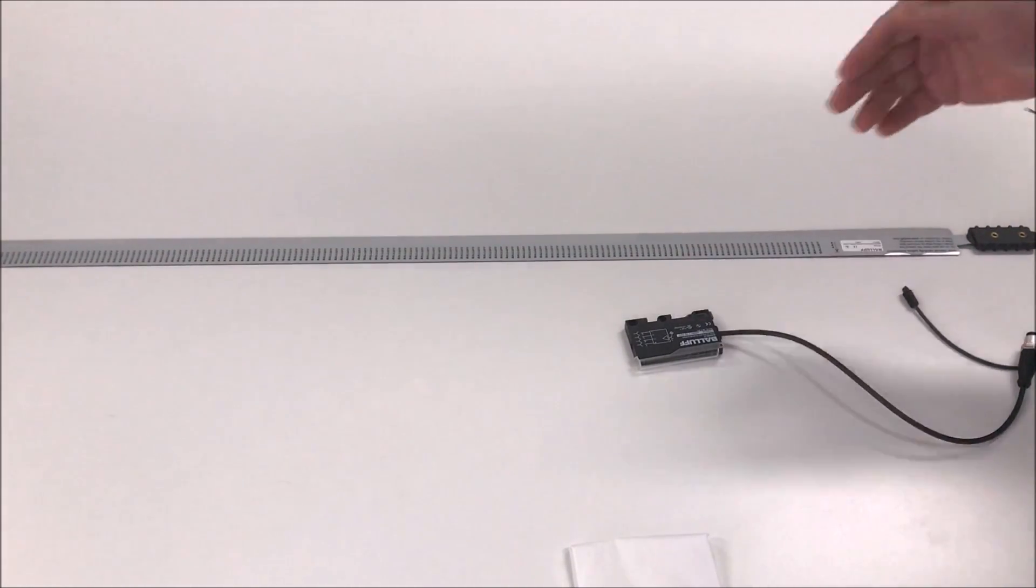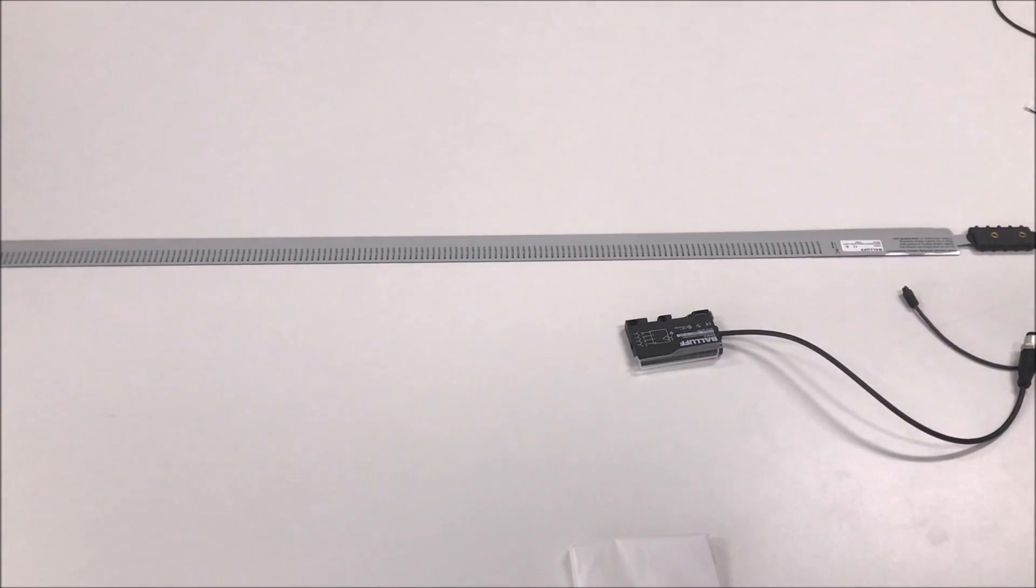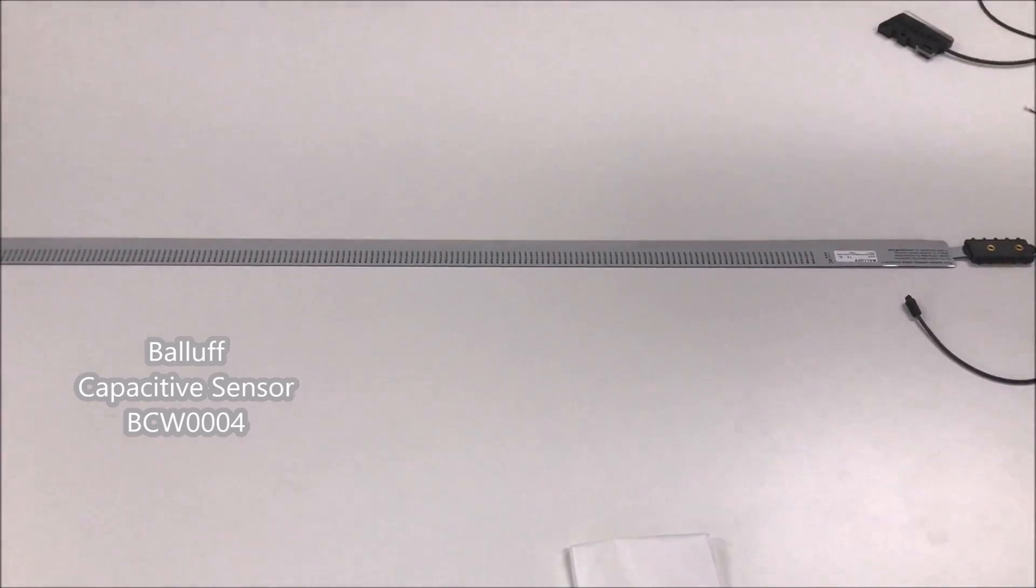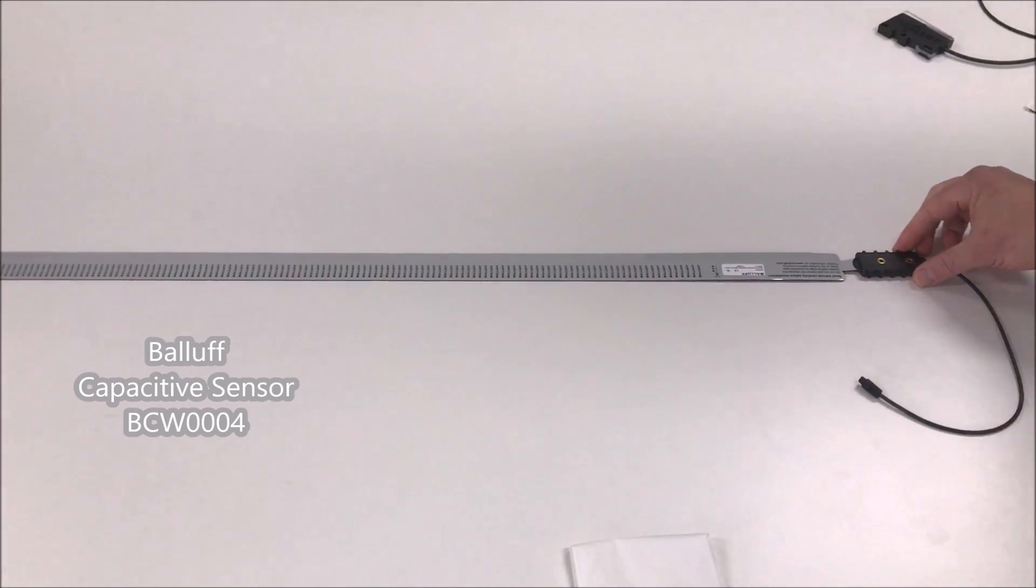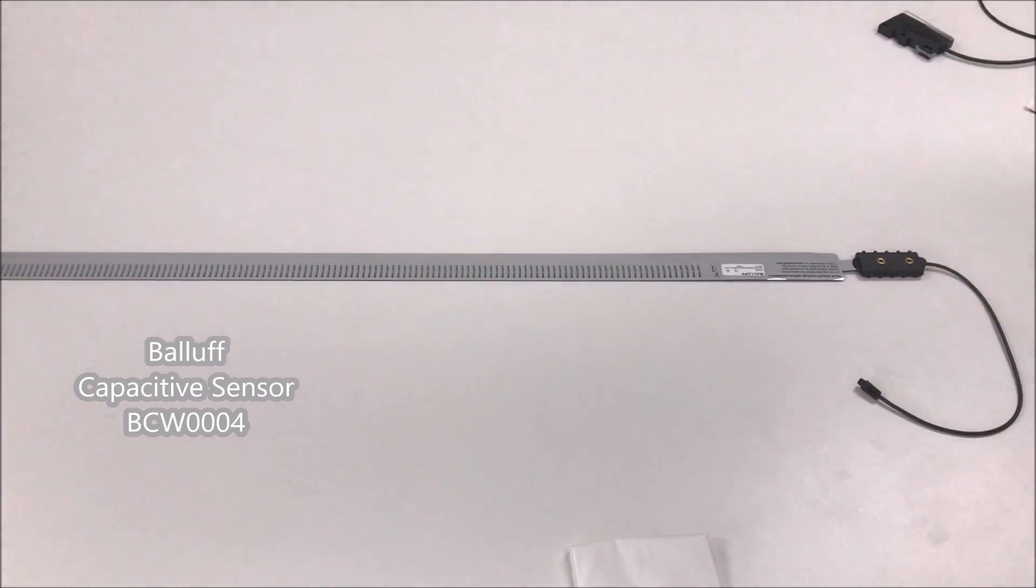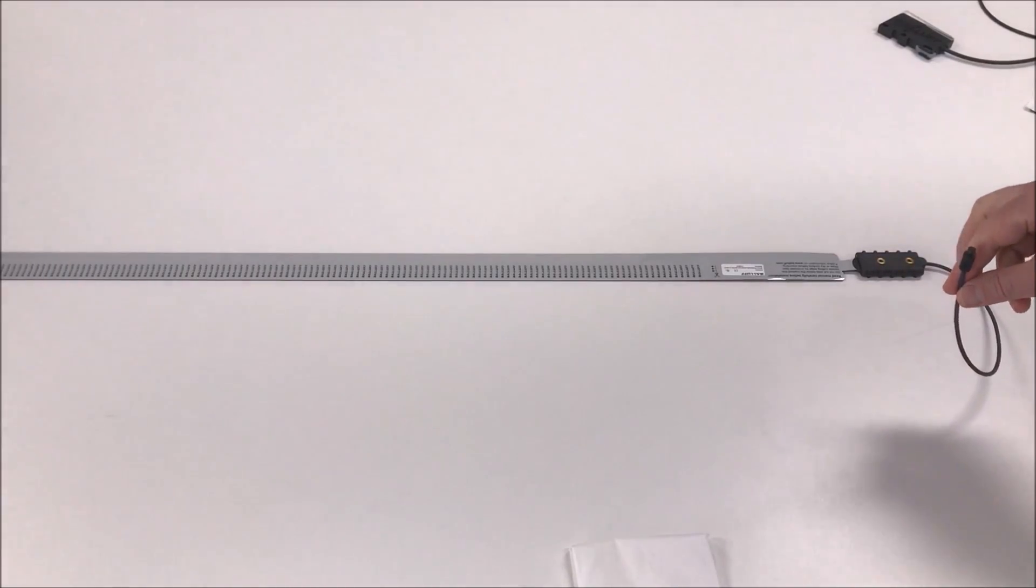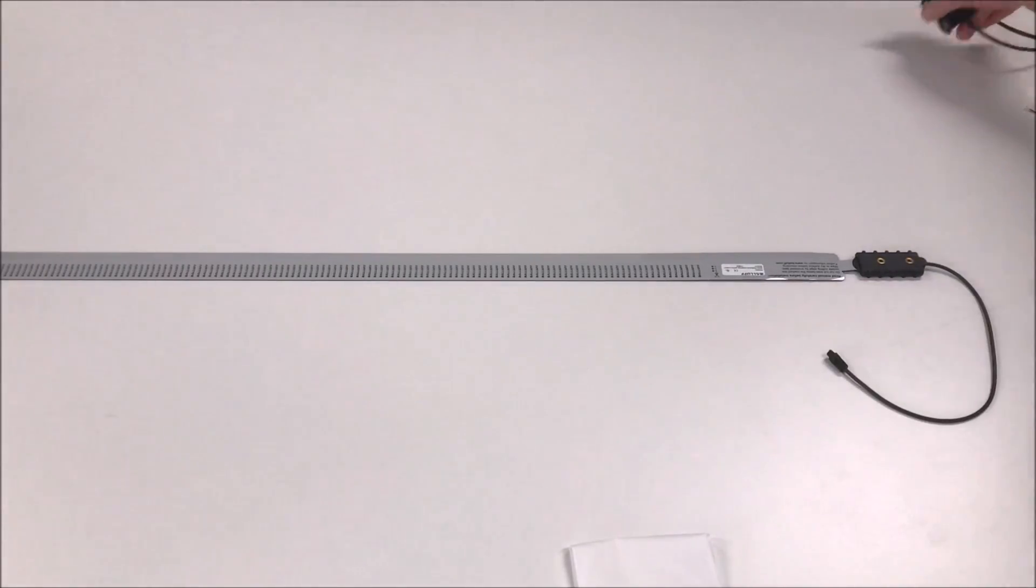The tape can be cut to the required length before being fixed to the required glass or plastic container which will hold the media to be detected. The capacitive tape has an electronics housing at one end with fixing holes for mounting. The plug-in connector attaches to the amplifier.